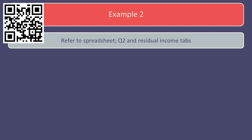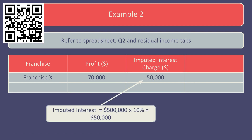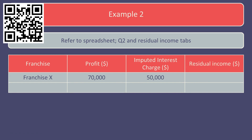In this case, we are required to calculate the residual income of each of the proposed franchise investments and to comment upon the results. For franchise X, the budgeted profit is £70,000. The imputed interest charge of £50,000 is calculated as the company's cost of capital of 10% multiplied by the necessary investment of £500,000. The residual income for franchise X's investment is £20,000 positive.